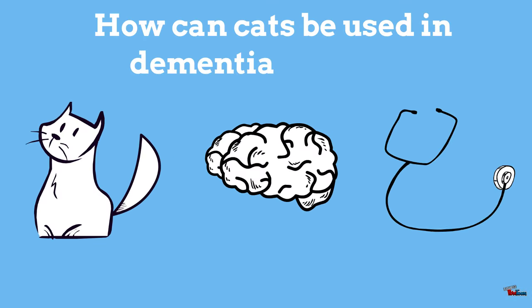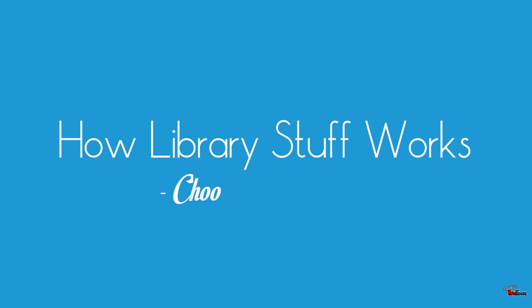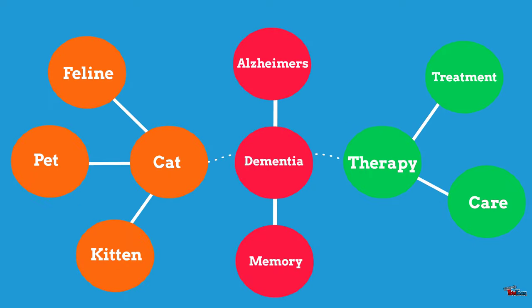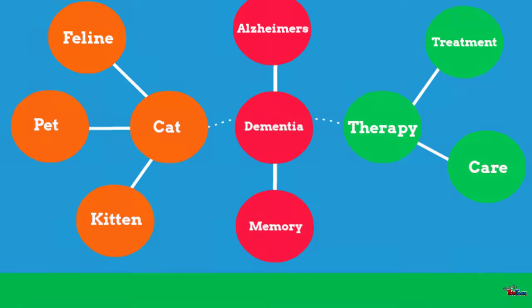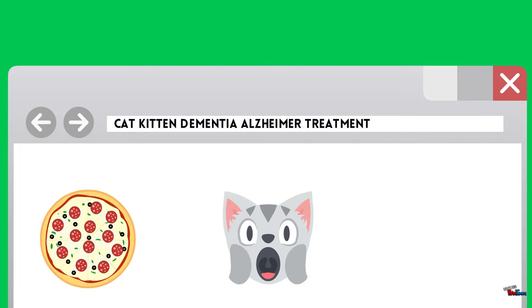Let's say you are looking for information about the use of cats in dementia therapy. You've already watched the How Library Stuff Works video on how to choose keywords and developed a search strategy which looks a little bit like this. Feeling keen, you plug all of these words into the database and come up with, well, not exactly what you were looking for.